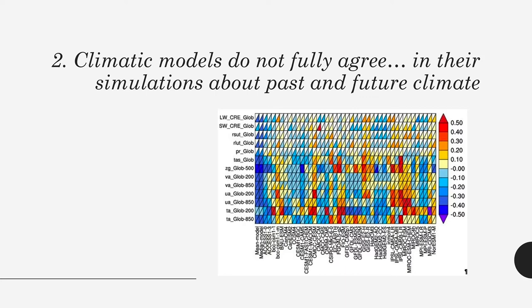The second important thing: if you want to make predictions for the future or the past — for instance, where was a species during the Last Glacial Maximum, or what is going to happen with my species as climate changes — you need to understand that the earth system models, those extremely complex three-dimensional models, we have different ones and their predictions don't fully agree. They more or less show some trends and basically agree on temperature change, but not on precipitation change.